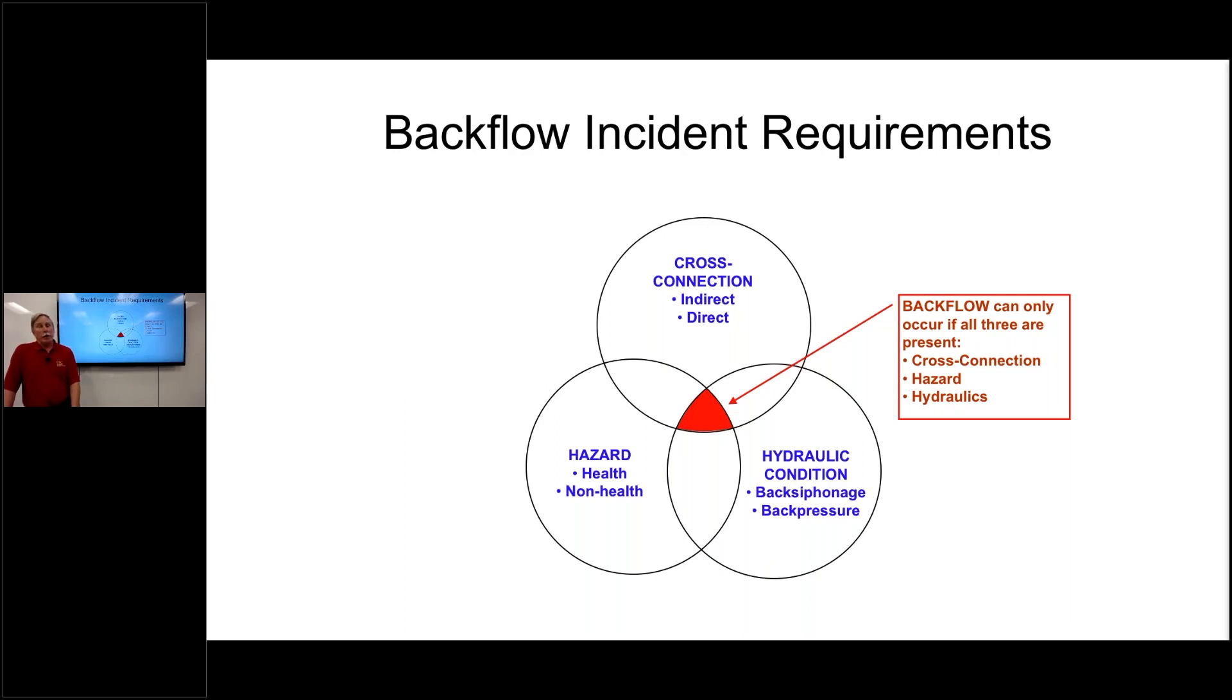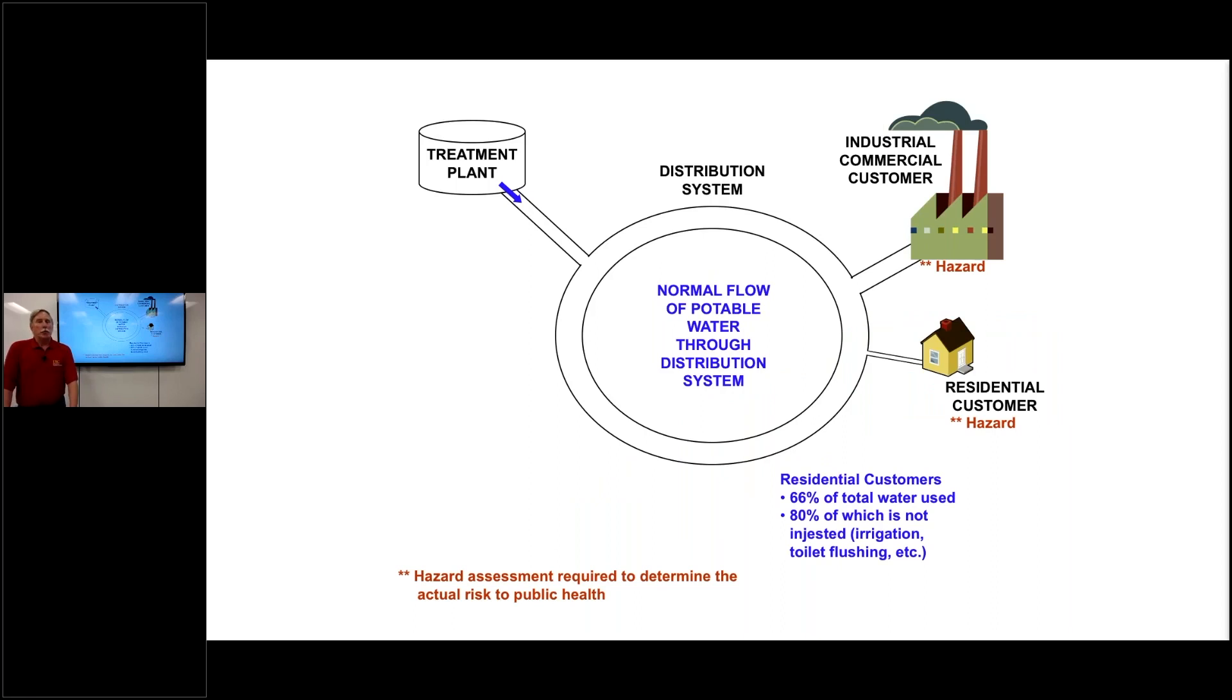We then wanted to take it a step further and talk about really how does a backflow incident affect a water distribution system. So a very simplified water distribution system was illustrated. You can see in this illustration, it shows a water treatment plant in the upper left, a very simplistic water distribution system, and then water users, both industrial, commercial, as well as residential. And then as we set this into motion to show that as water leaves the treatment plant, flows through the distribution system, the water goes to the end user, to that customer. And I think everybody understood this very easily. Obviously, it's a very simplistic distribution system illustration here.